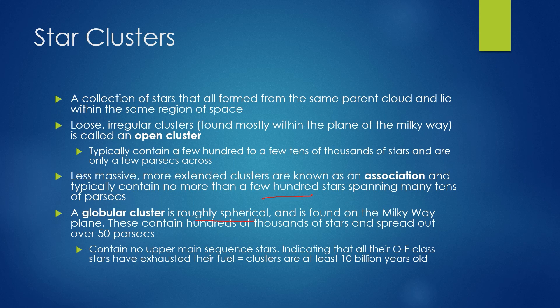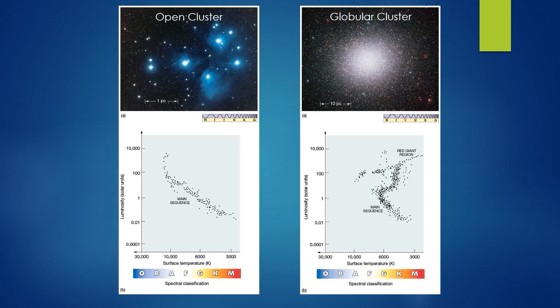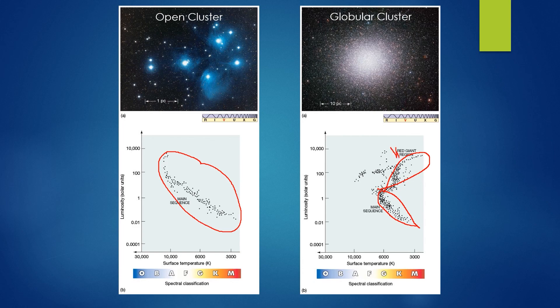A globular cluster is a roughly spherical cluster of stars found in the Milky Way plane. These contain hundreds of thousands of stars spread out over about 50 parsecs. These contain no upper main sequence stars, indicating that all their O to F class stars have exhausted their fuel, meaning these clusters are at least 10 billion years old. An open cluster is mostly going to be main sequence stars, whereas a globular cluster has many stars starting to reach their death stage — a lot of red giants — meaning they are much, much older, whereas an open cluster shows it is in fact much younger.